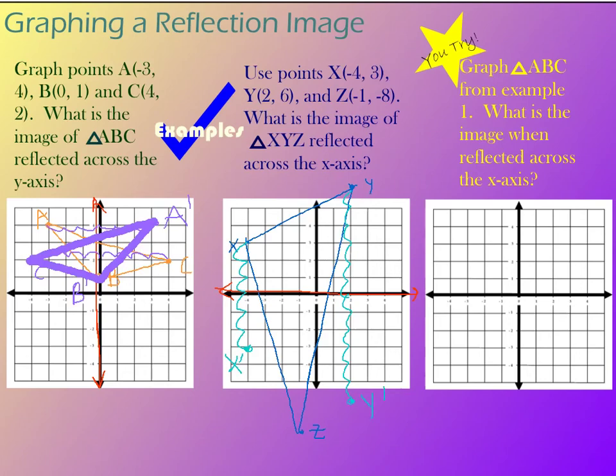And Z, counting 1, 2, 3, 4, 5, 6, 7, 8 units down and then 1, 2, 3, 4, 5, 6, 7, 8 units up. There is Z prime.